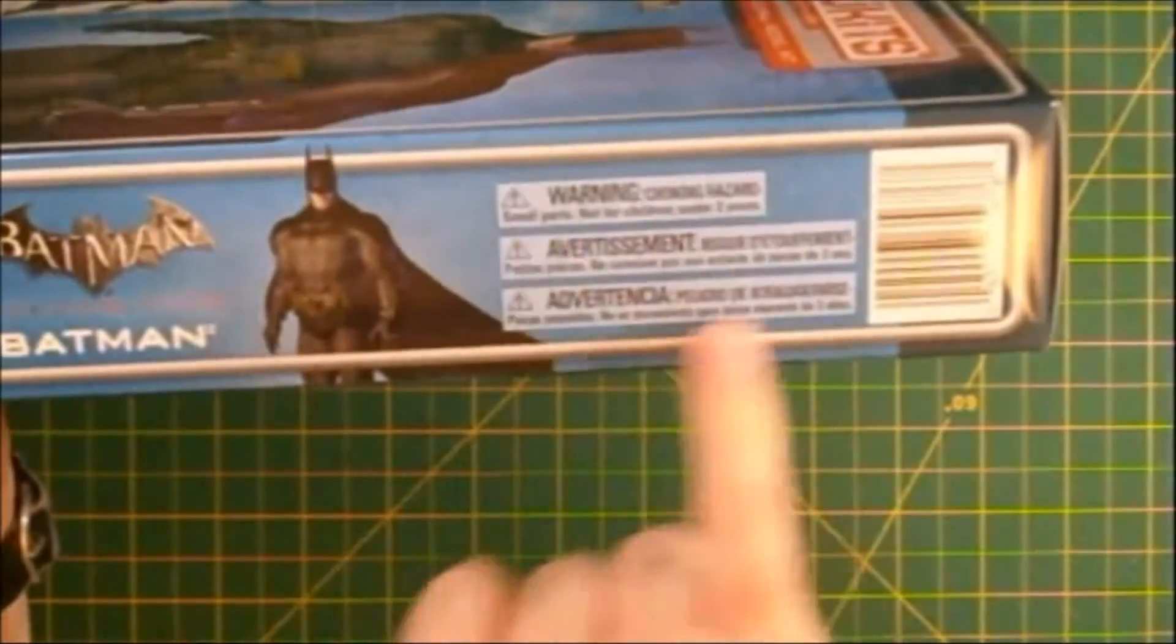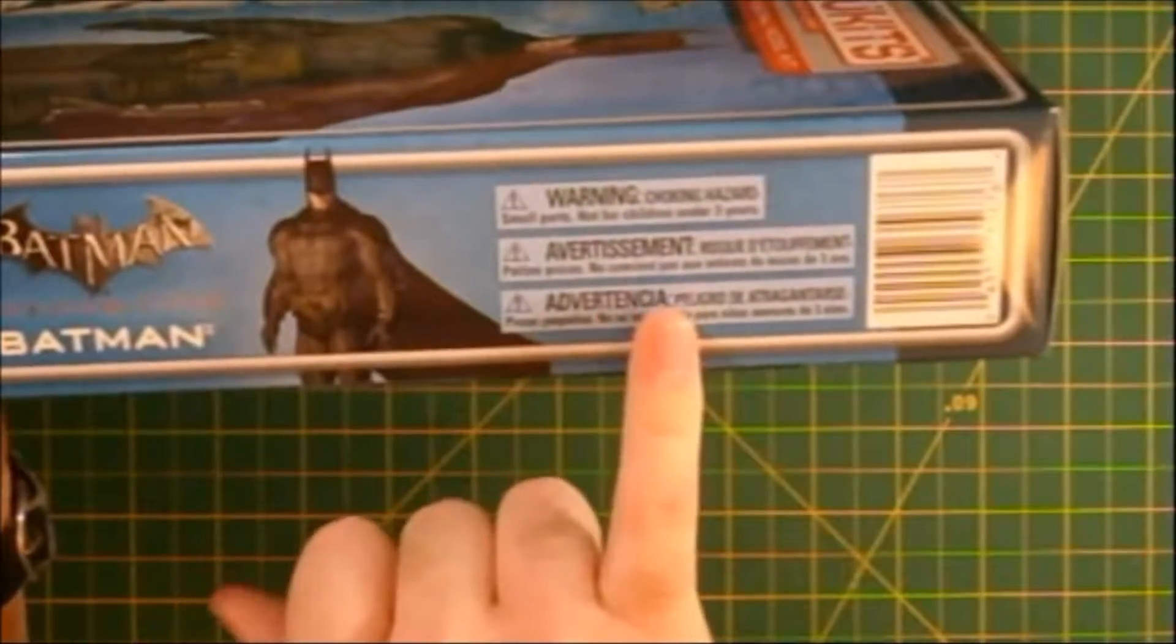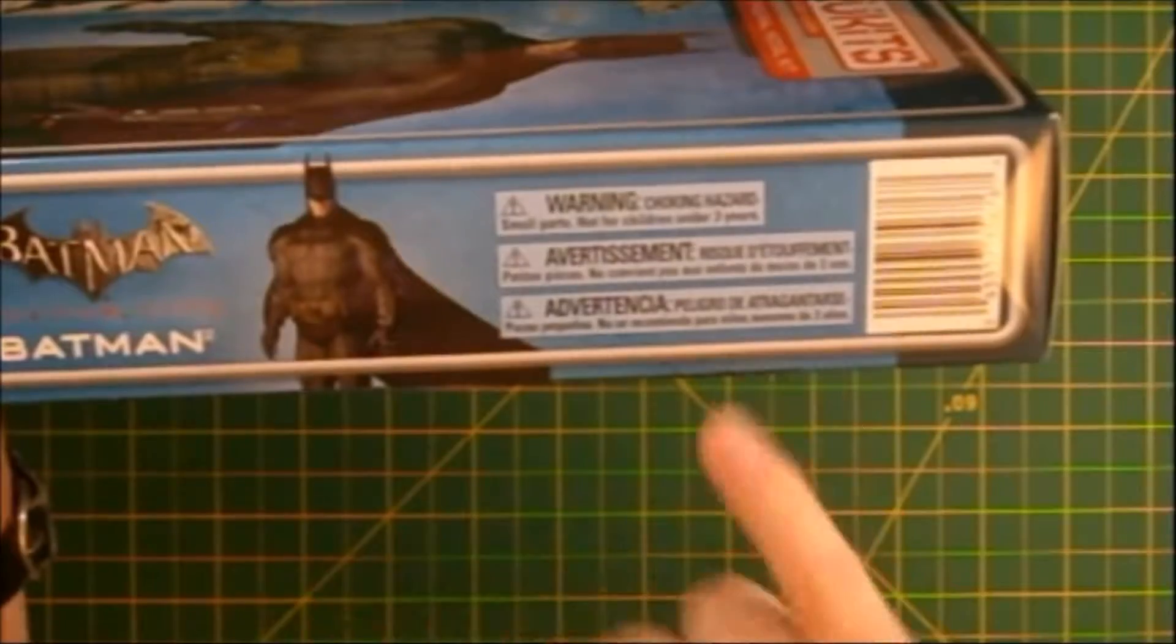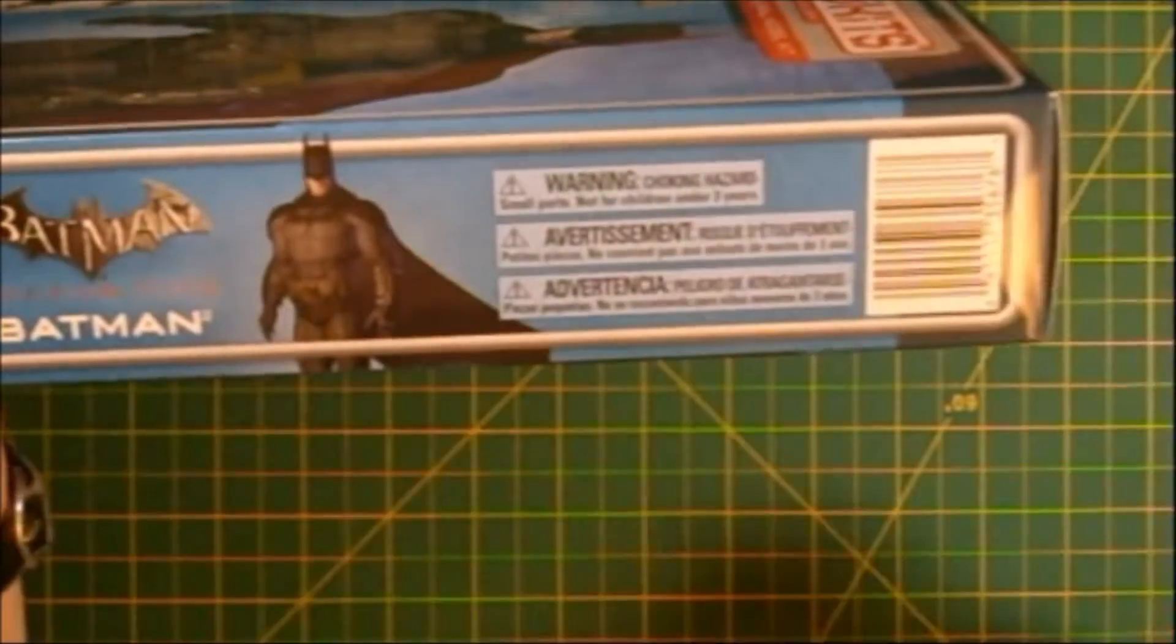Over on this side here, on the left side of the box, pretty much we've got the same as the right side. On the right side, we've got these warning labels and stuff, the choking hazard marker and everything, plus the UPC here.